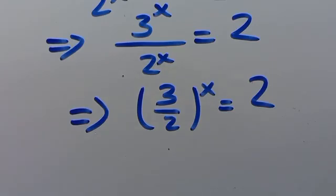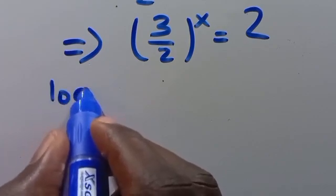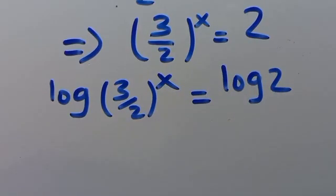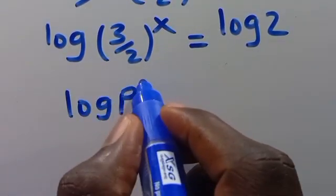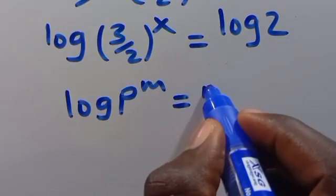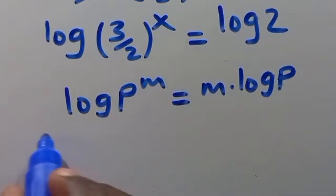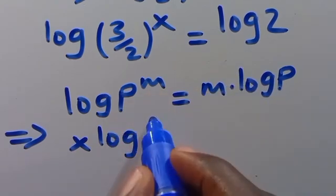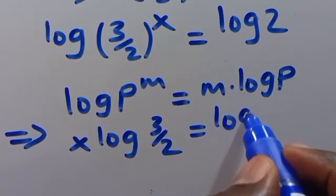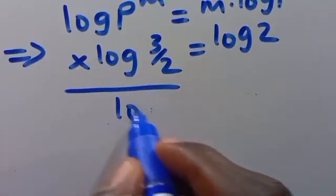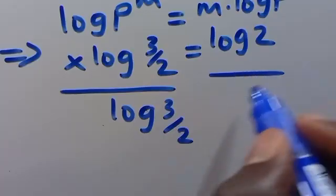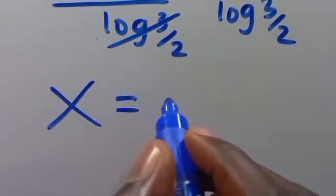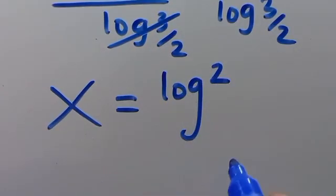So from here, let's introduce log to both sides. We are going to have log of (3/2) to the power of x equals log 2. Then using the rule log p to the power of m equals m multiplied by log p, this becomes x multiplied by log(3/2) equals log 2. So dividing both sides by log(3/2), we have x equals log 2 over log(3/2).